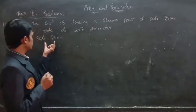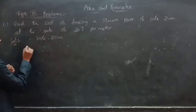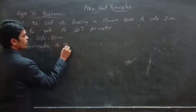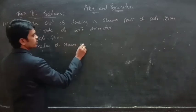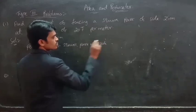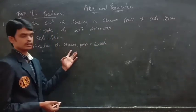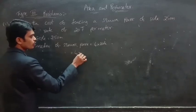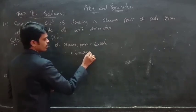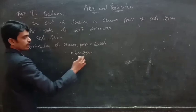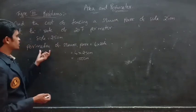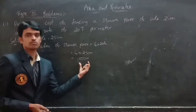They have given side as 250 meters. First we find the perimeter of the square park. The formula is 4 into side. So perimeter equals 4 into 250 meters, which equals 1000 meters. The perimeter of the square park is 1000 meters.